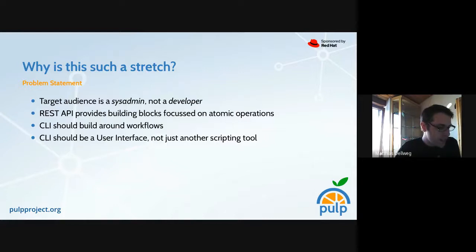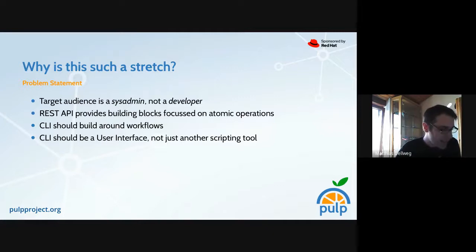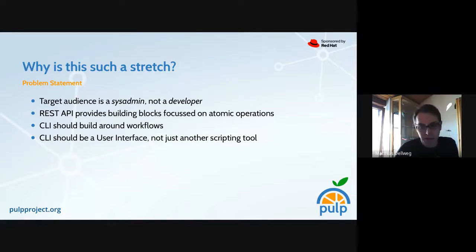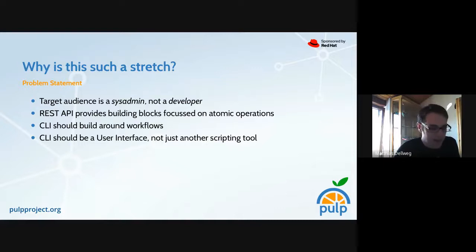Why is it such a problem? If it were easy, we probably already had one. One important thing to keep in mind is that the target audience is a sysadmin and not a developer. The REST API provides good building blocks for doing stuff, but it is focused on atomic operations. Therefore the CLI should build around workflows, and it should be a user interface — the user being maybe an administrator — not just another tool you need to script or program something around.